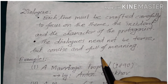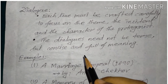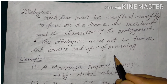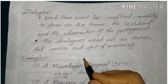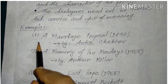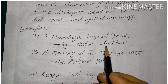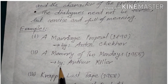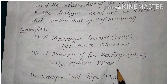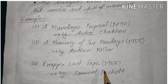If you look at the characteristics — theme, character, and plot — it is very meaningful. For examples: Number 1 is Anton Chekhov, A Marriage Proposal, 1890. Number 2 is Arthur Miller, A Memory of Two Mondays, 1955. And Samuel Beckett, Krapp's Last Tape, 1958.